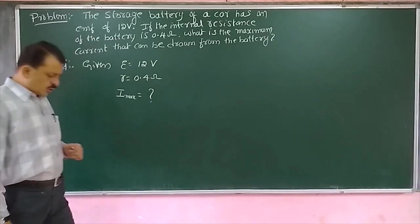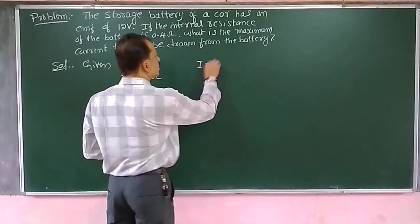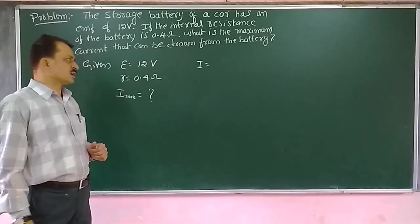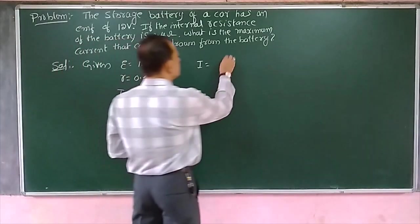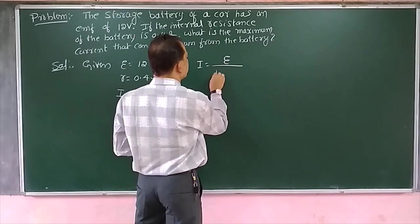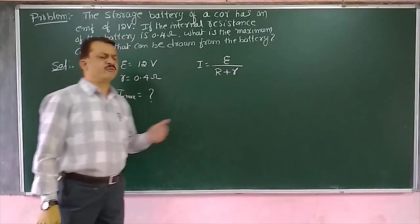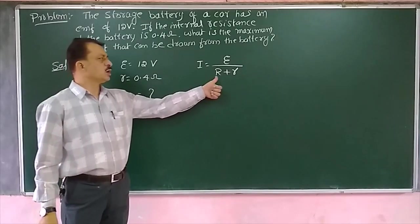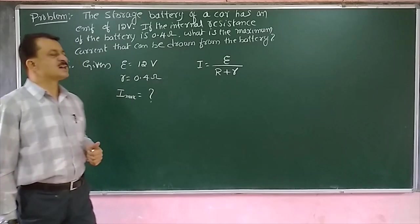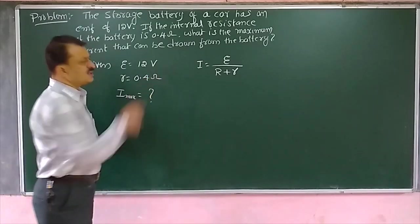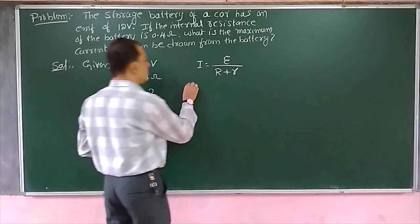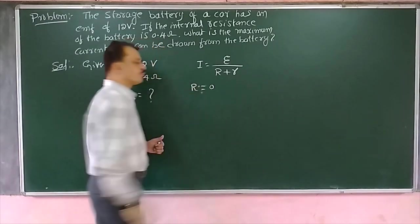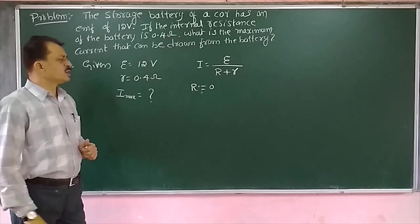We know a simple expression for current when a battery is connected to an external load R: I is equal to EMF divided by capital R plus small r. Now the current is said to be maximum if capital R is equal to zero — that is, the value of the external load is zero.